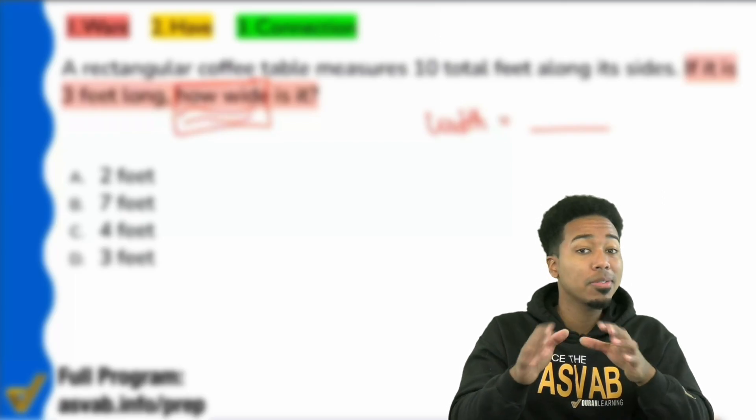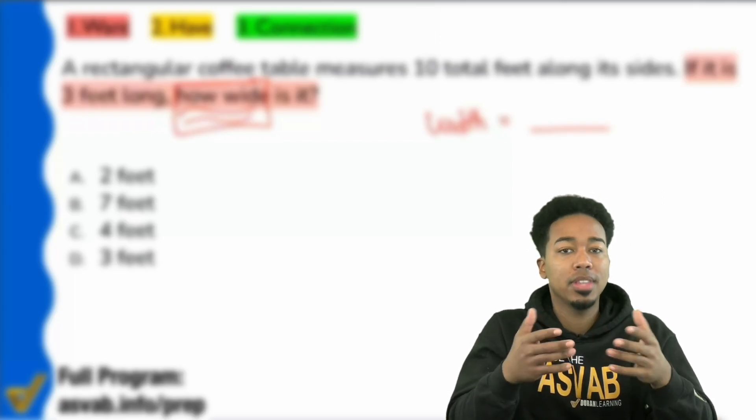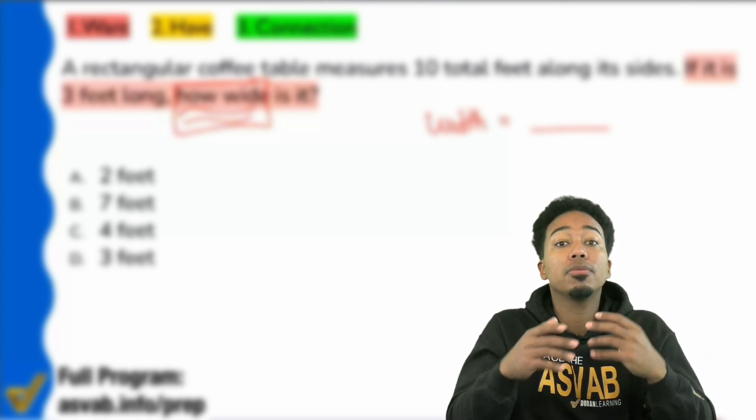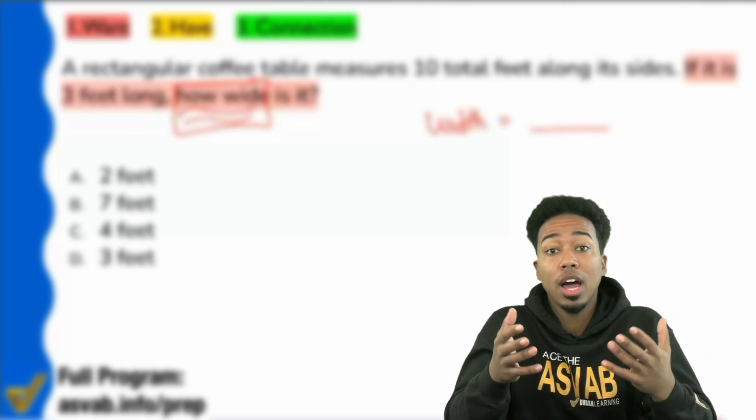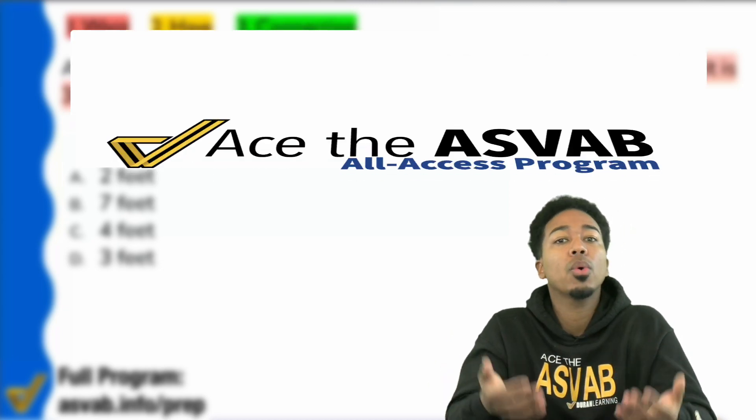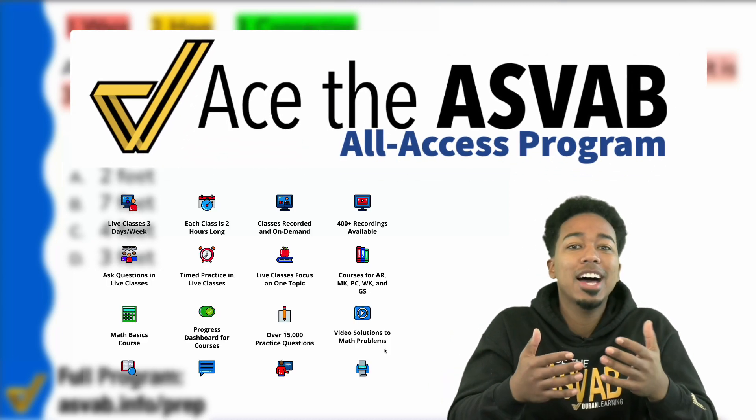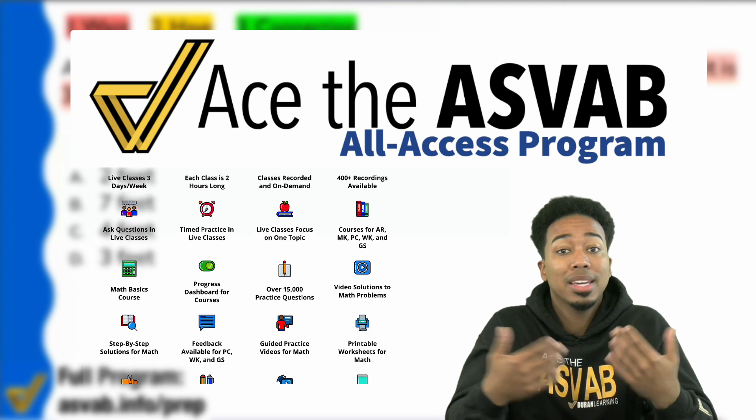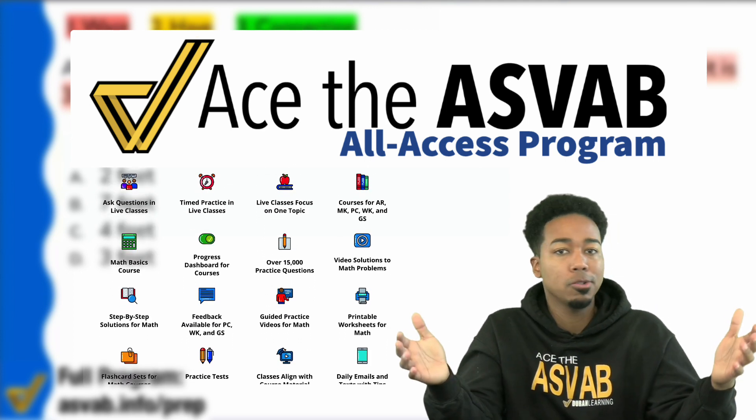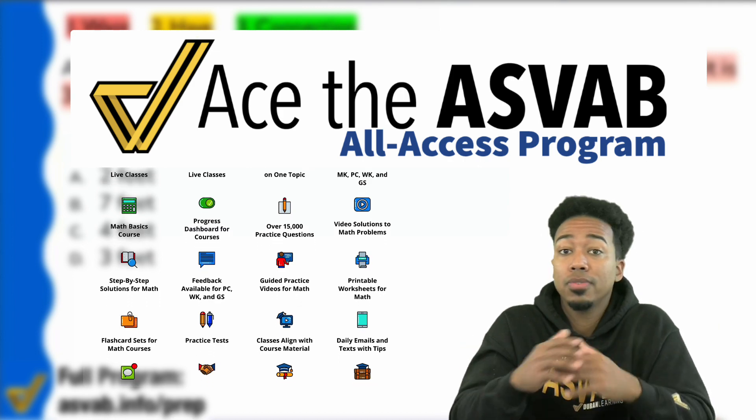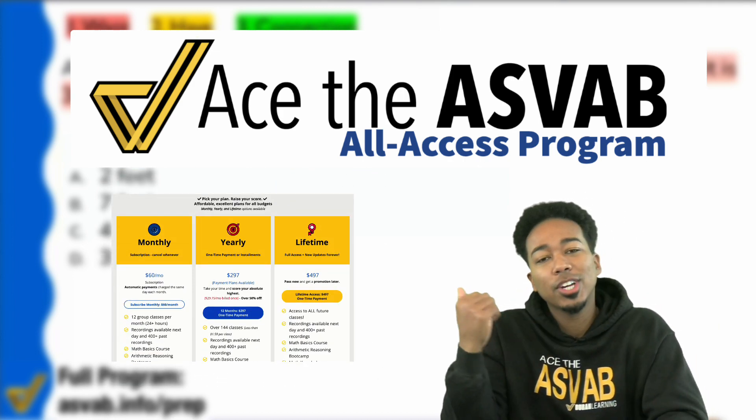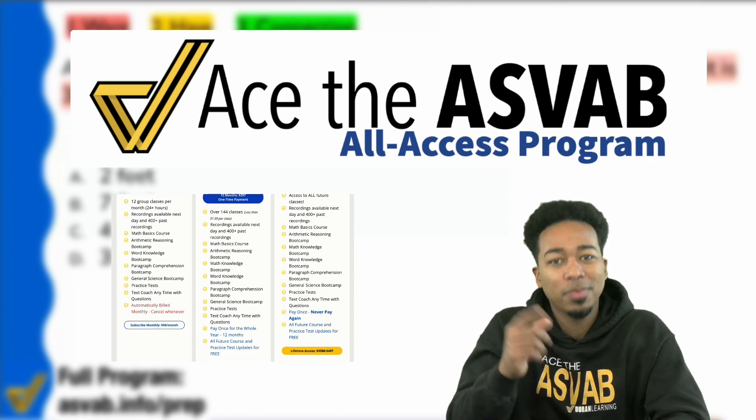And before we continue, one of the main frustrations that so many people have with the ASVAB is not knowing what to study and how to study to begin with. So if you're one of those people that can do a good job if everything's lined up for you, then go ahead and join our program. We have all the classes, all the recordings, all the courses with practice questions, with videos, and you can text me all the way up until you pass. It's very simple, straightforward, and it gets you to the score and the job you want. Check out the link in the description of this video to learn more and sign up now.